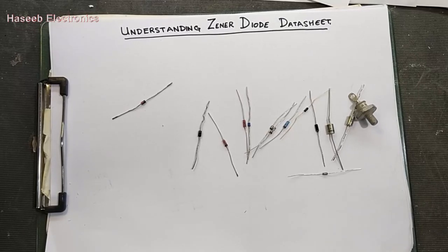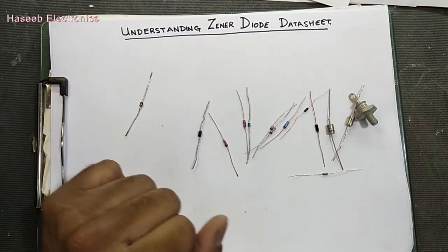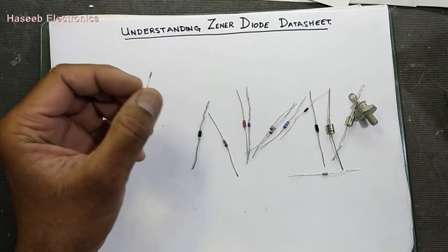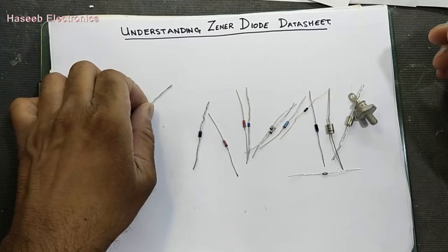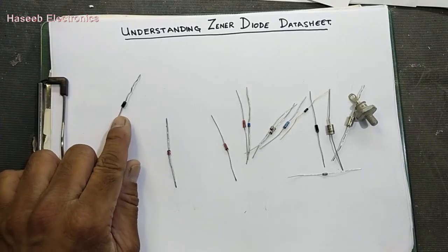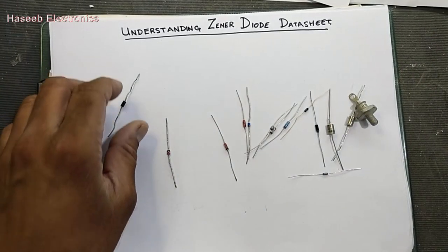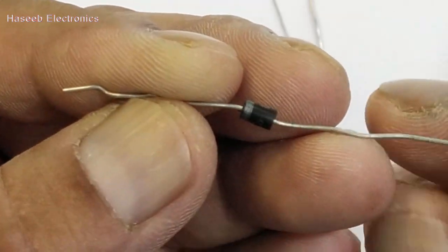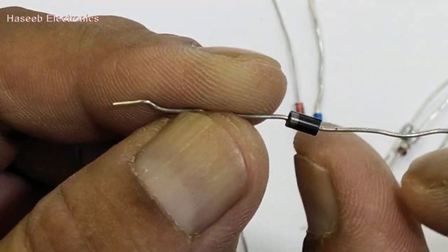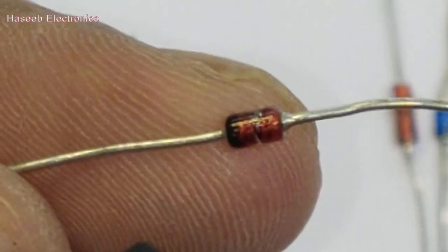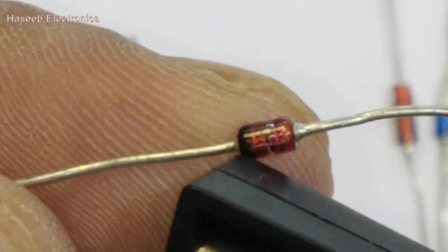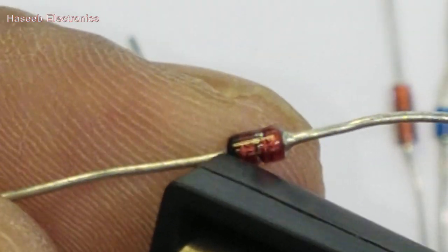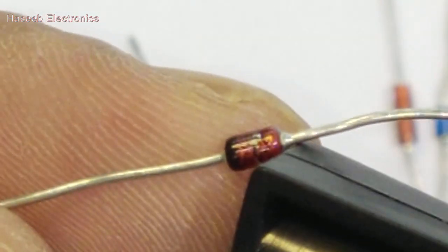Assalamu alaykum wa rahmatullahi wa barakatuh. In this video we will discuss how we can understand a datasheet for a zener diode. Here I have a simple diode which is a rectifier diode. One color band is here to indicate the cathode side; the other side is the anode side. Similarly, we have a black bar here that will indicate that it is the cathode side and the other side is the anode side.